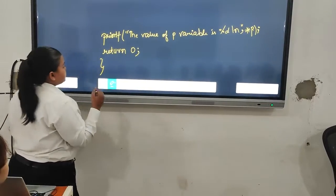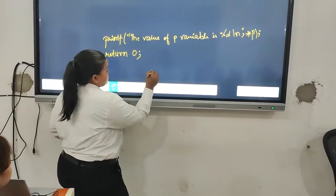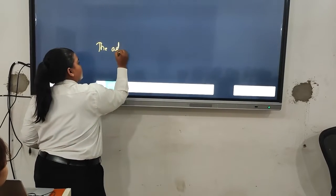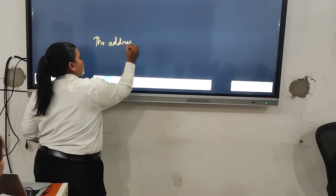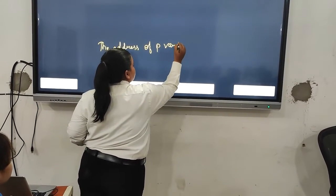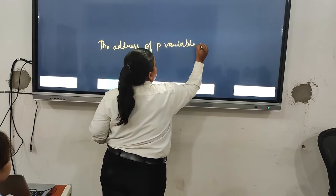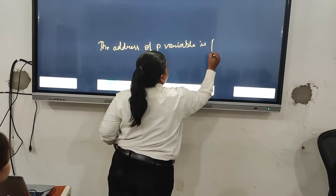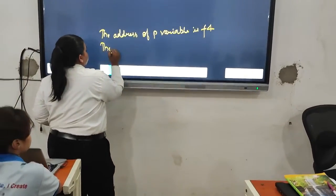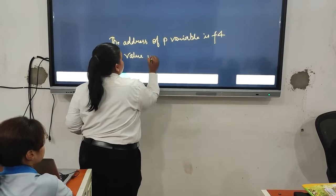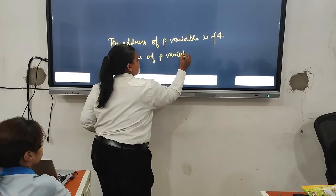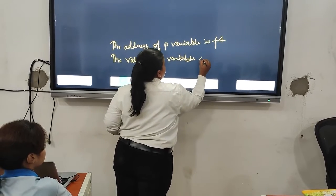So what output we will get? The output will be the address of p variable is F4. And another one will be the value of p variable is 50.